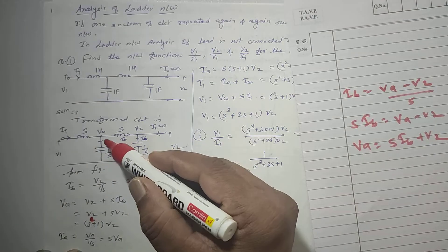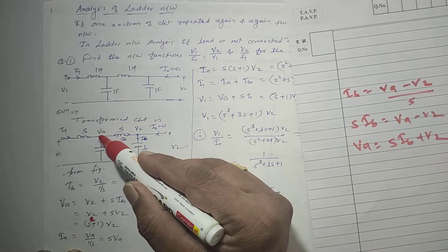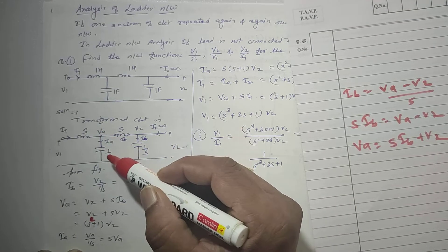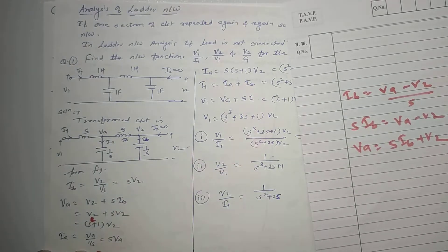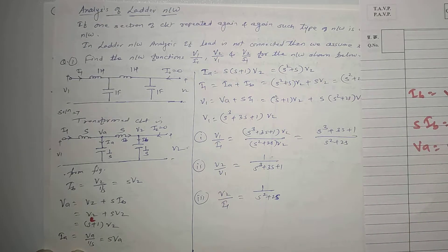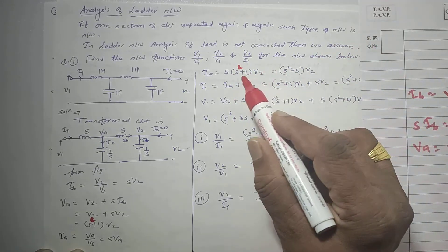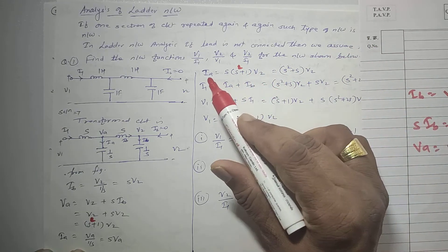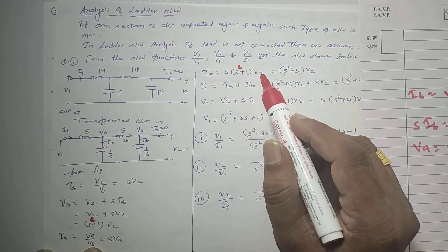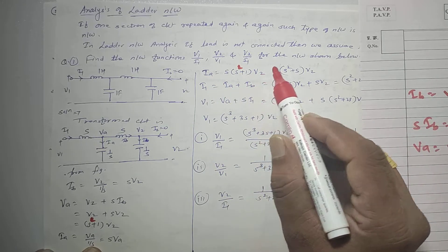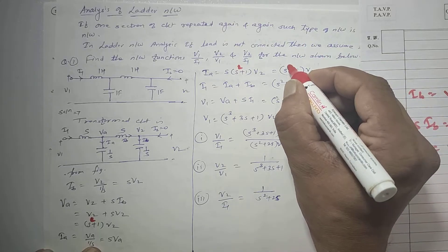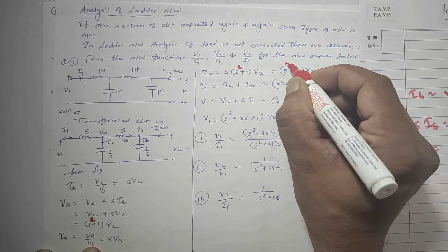Next, IA is equal to VA divided by 1/S, which equals S·VA. Substituting VA = (S² + 1)V2, we get IA = S·(S² + 1)V2. So IA is S cubed plus S times V2 — the exponent becomes cubic.